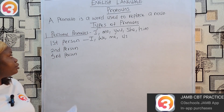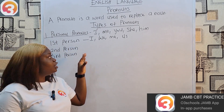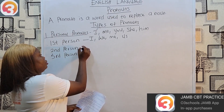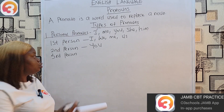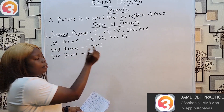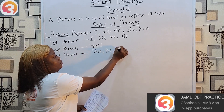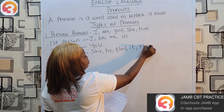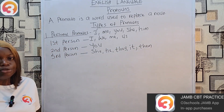Those are first person personal pronouns — the person speaking. Then 'you' — the person spoken to — that is second person. The person spoken about is third person: she, he, they, it, them. Those are third person pronouns.